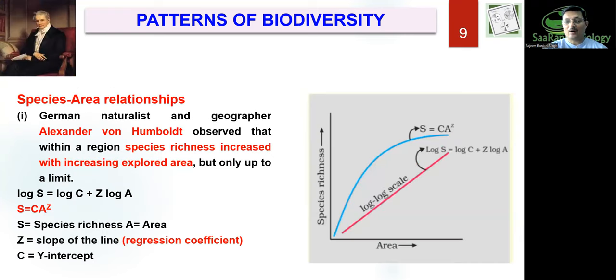One important scientist we should talk about is Alexander von Humboldt, a German naturalist and geographer. He said that within a region, species richness increases with increasing explored area, but only up to a limit.